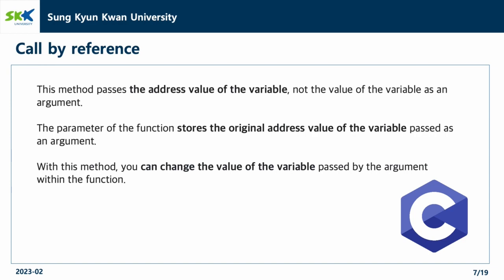The next method of passing data to a function is call by reference. This method passes the address value of the variable, not the value of the variable, as an argument. The parameter of the function stores the original address value of the variable passed as an argument. With this method, you can change the original value of the variable passed by the argument within the function.